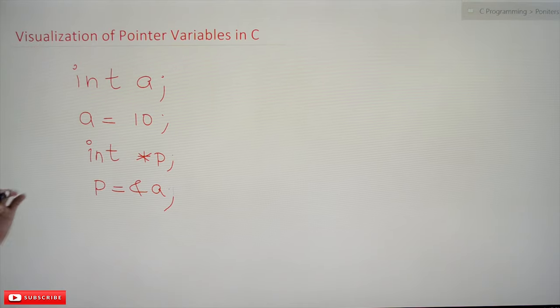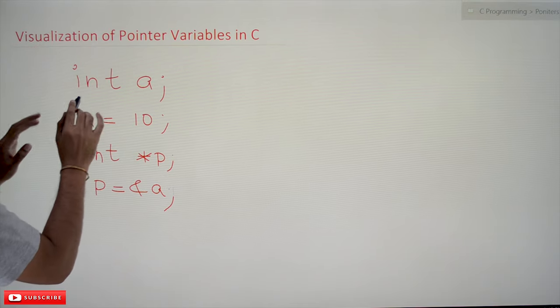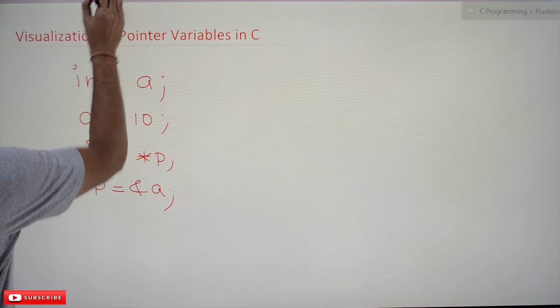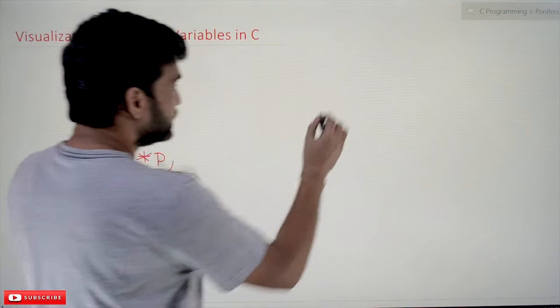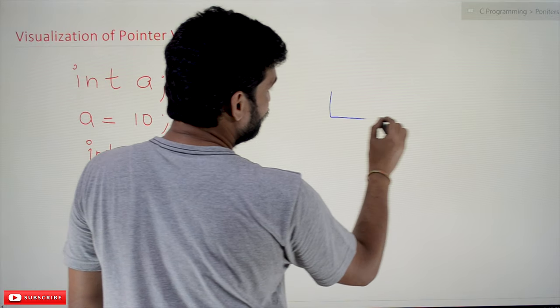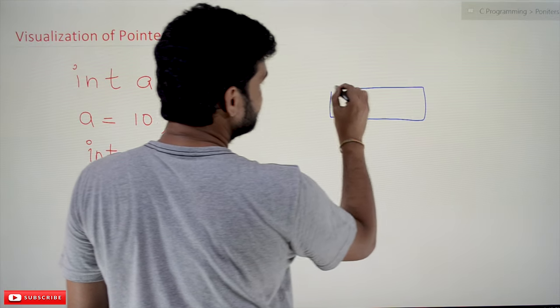The first code is: an integer variable a has been declared. Integer a has been declared means on the compiler, a memory block is created. It may be two bytes or three bytes based upon the capacity of integer.